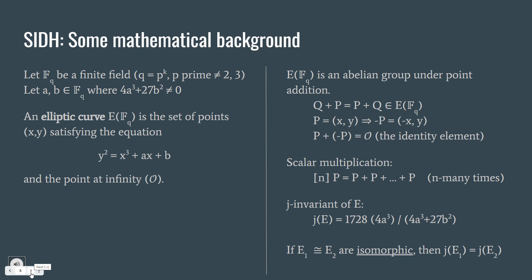The j-invariant of E is just a computation with respect to a and b. And two elliptic curves are isomorphic if and only if their j-invariant is same.